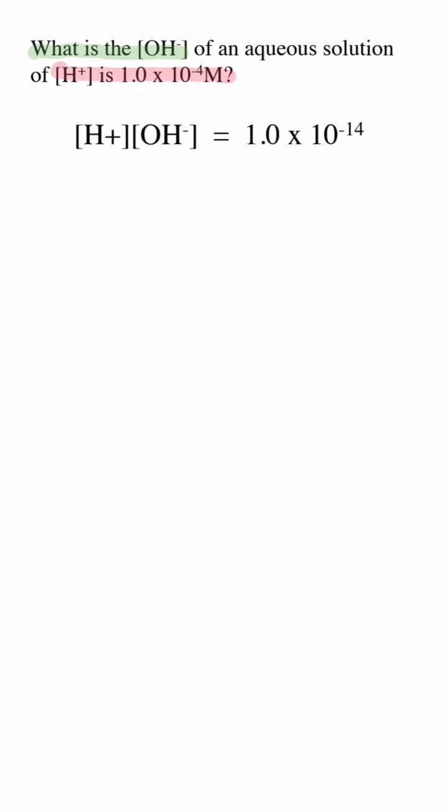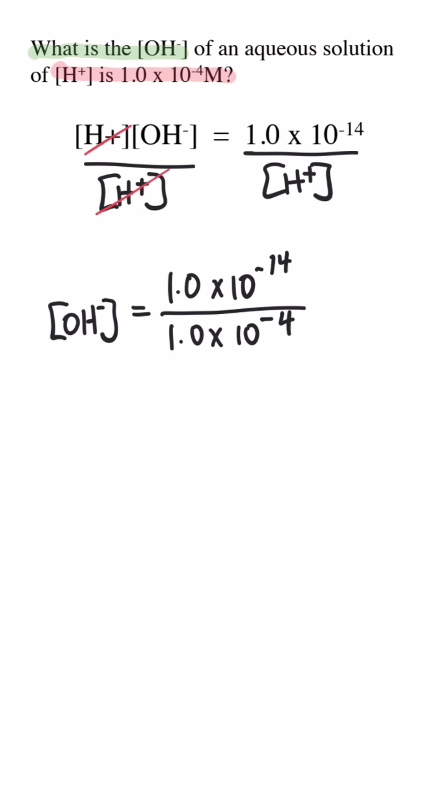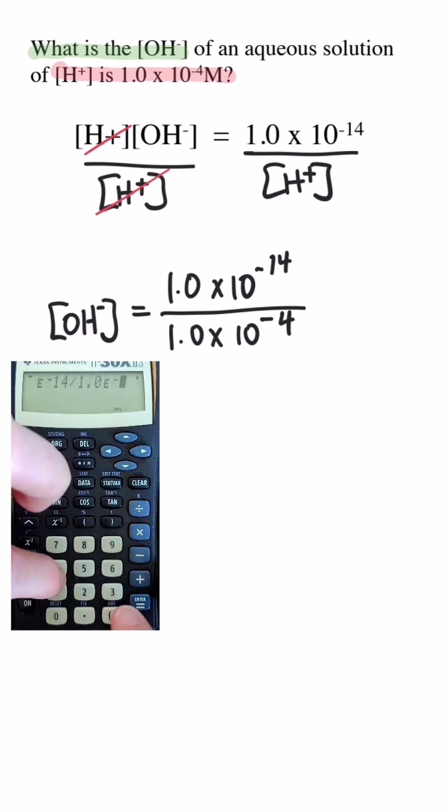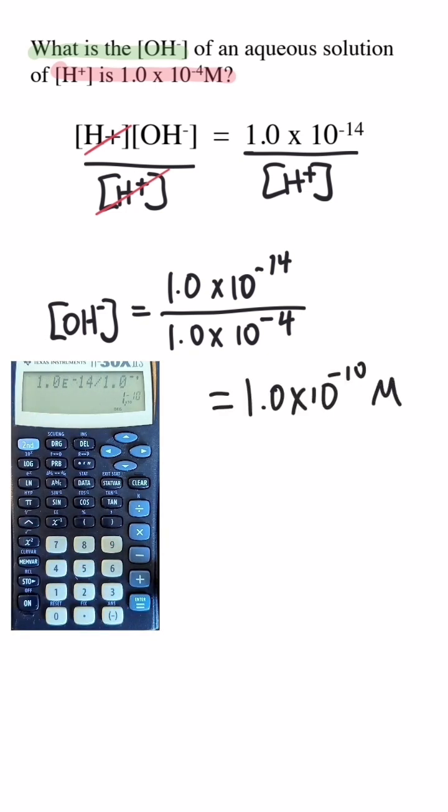We could divide both sides by the concentration of hydrogen ions, which will cancel and isolate the hydroxide ion concentration on one side of the equation. When we perform the calculation, we get the concentration of hydroxide ions, 1.0 times 10 to the negative 10 molar.